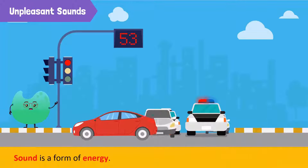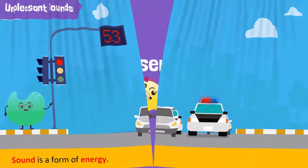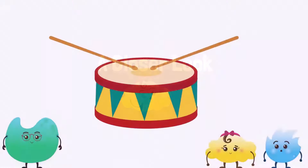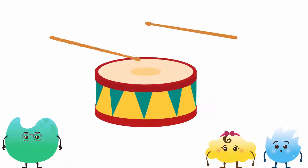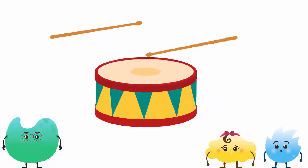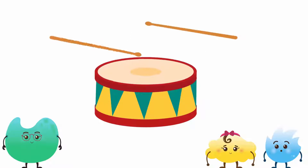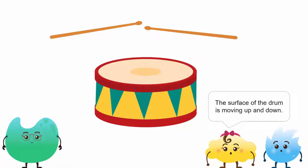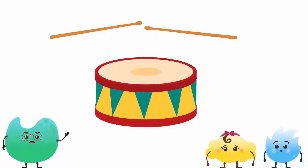Sound is a form of energy. Let's see how this energy is produced. Look closely at the surface of the drum when it is beaten. What do you observe? The surface of the drum is moving up and down. Now, place some small pieces of paper on the drum and beat it again.